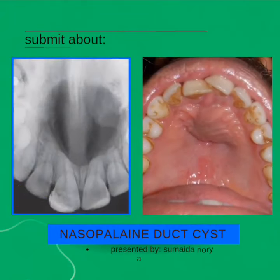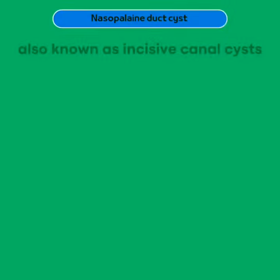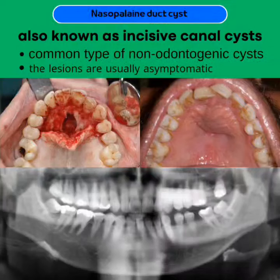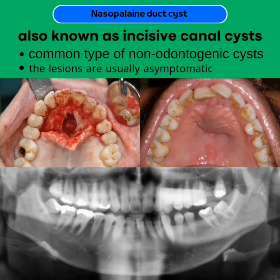Hello everyone. I am Soumaid Anouri. My presentation is about the nasopalatine duct cyst, also termed as the incisive canal cyst. It is the most common non-odontogenic cyst of the oral cavity, arising from the remnant of the nasopalatine duct — an embryonic structure connecting the oral and nasal cavities in the area of the incisive canal.